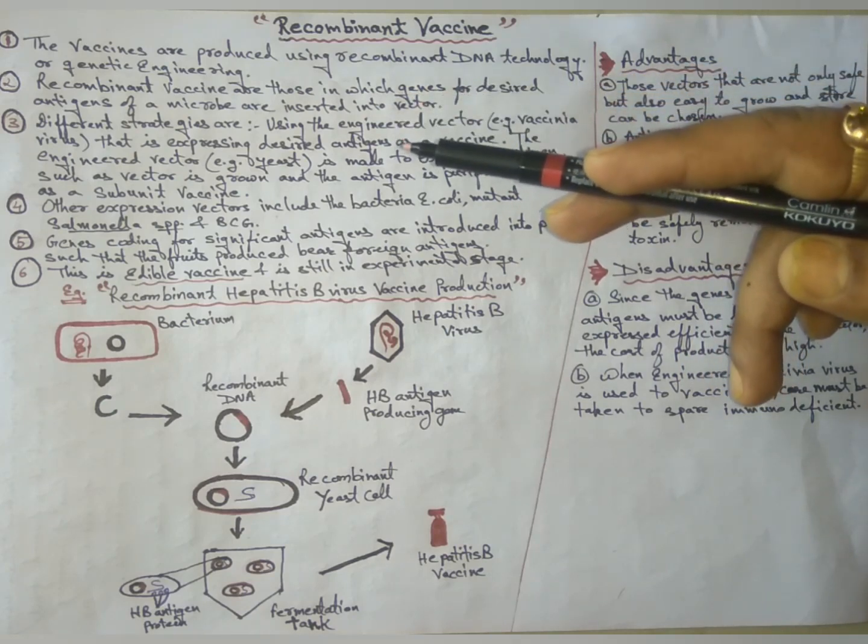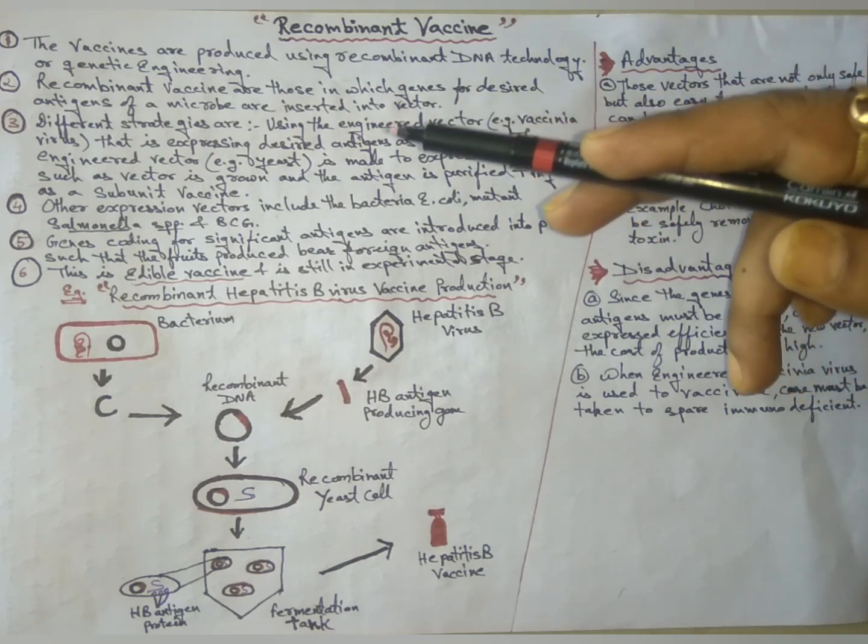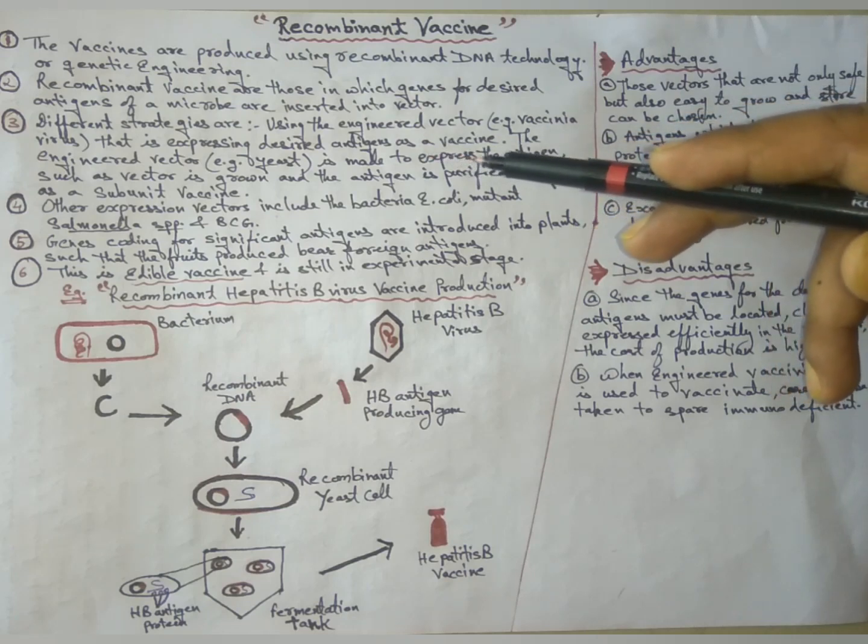Different strategies are used. The engineered vector, for example vaccination virus, expresses the desired antigen as a vaccine.